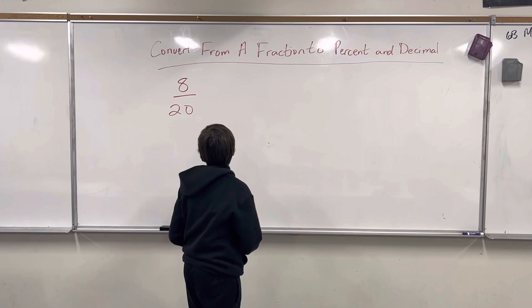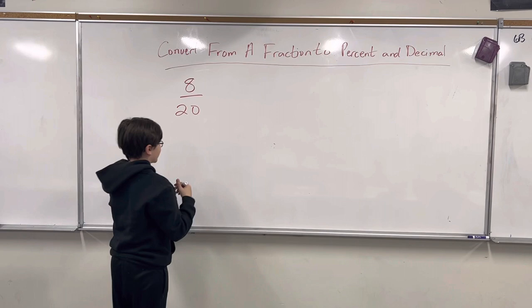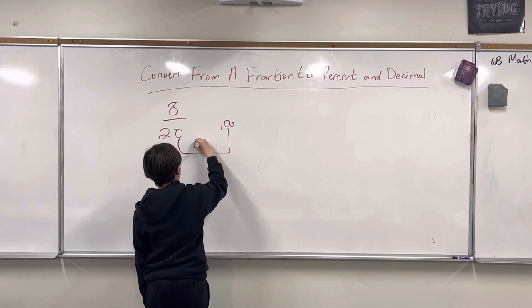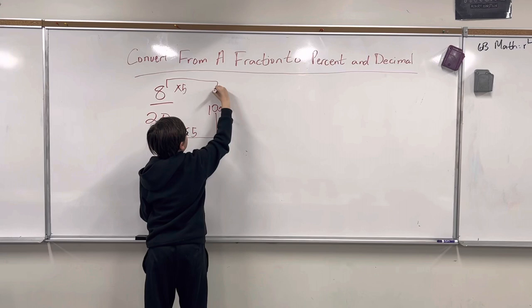All right, so first we're going to make an equivalent fraction with 8 over 20. We're trying to get 100 on the bottom, so we need to multiply this by 5. What we do to the bottom, we have to do to the top, so we multiply by 5 as well, which gives us 40.